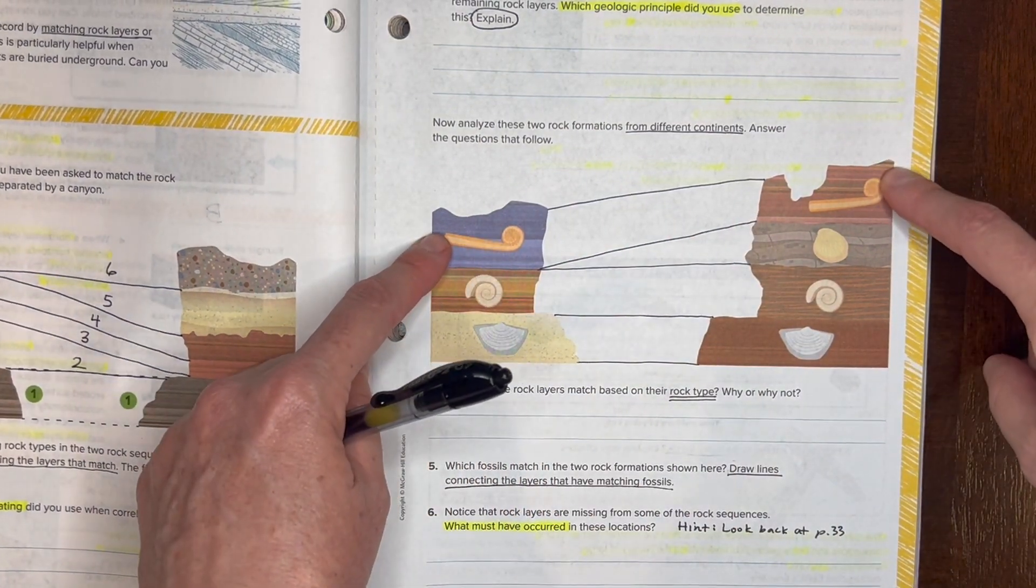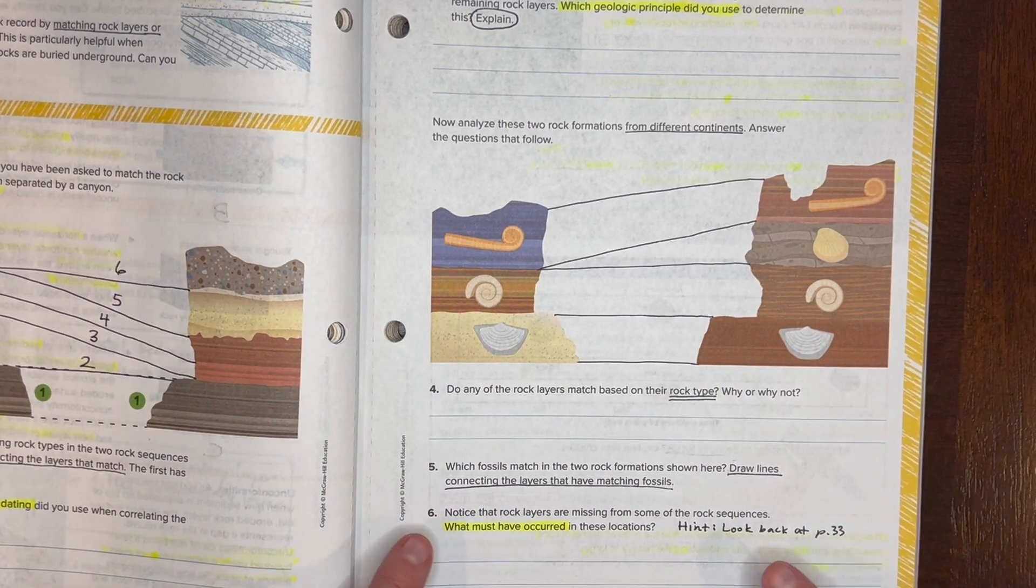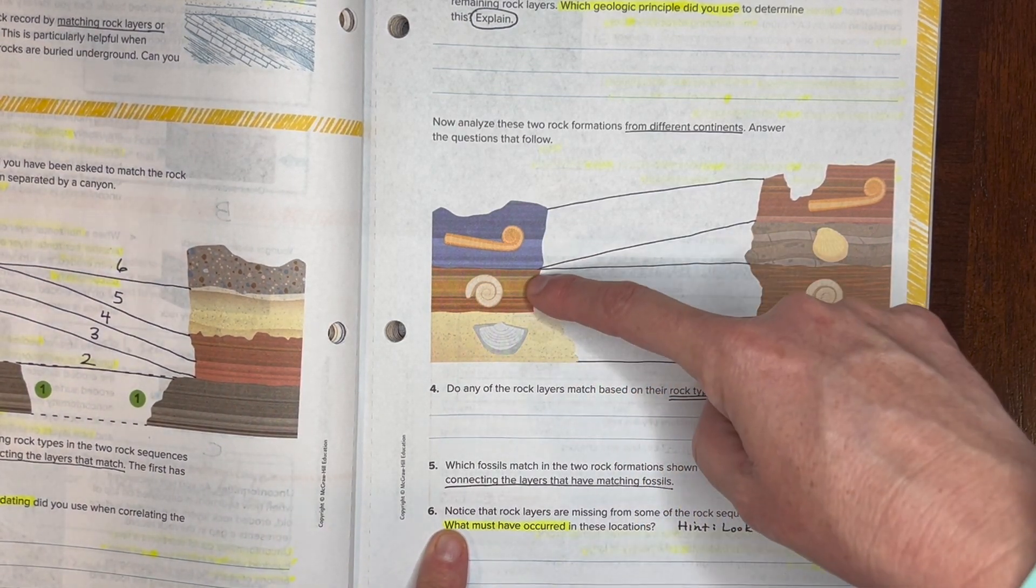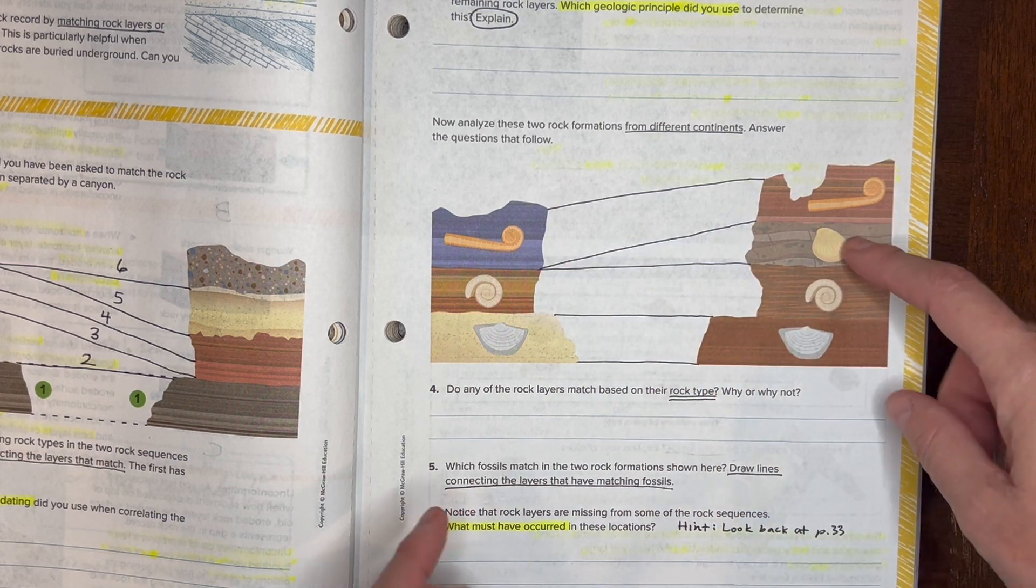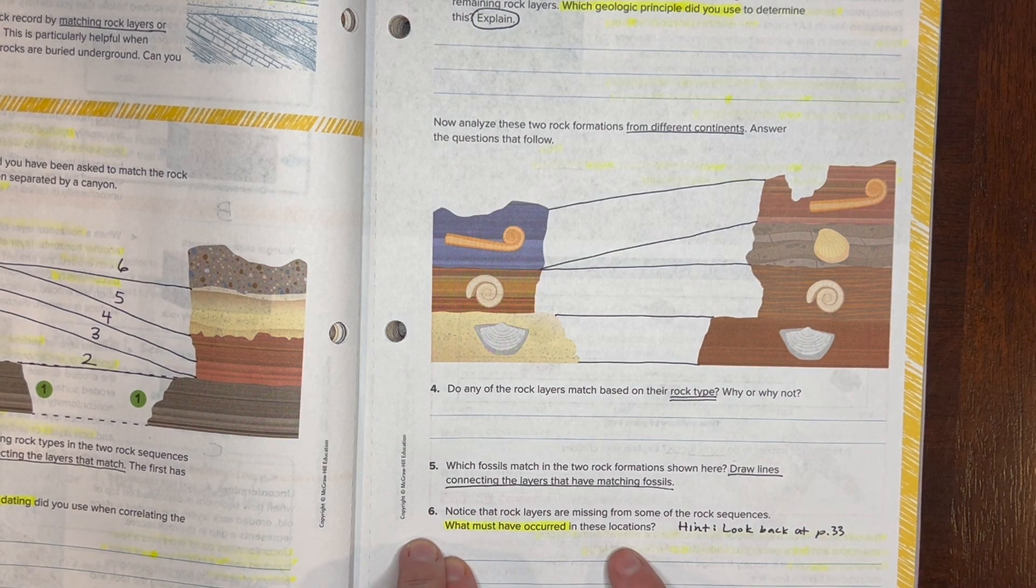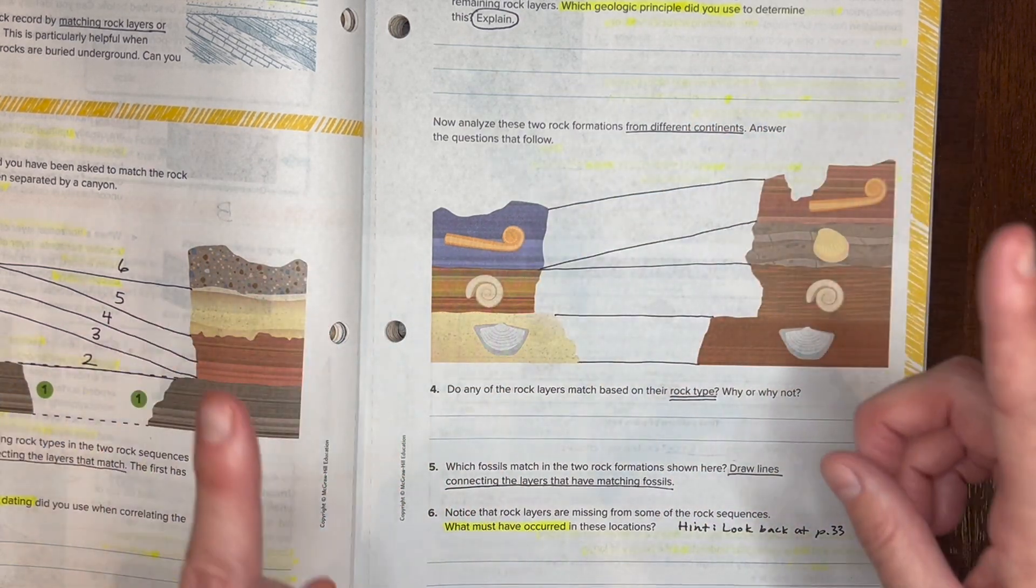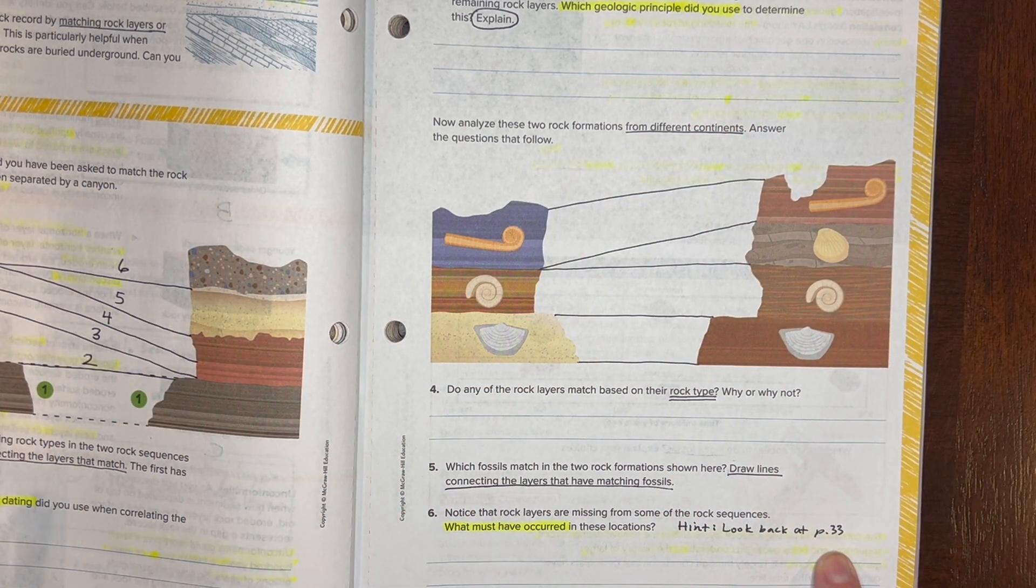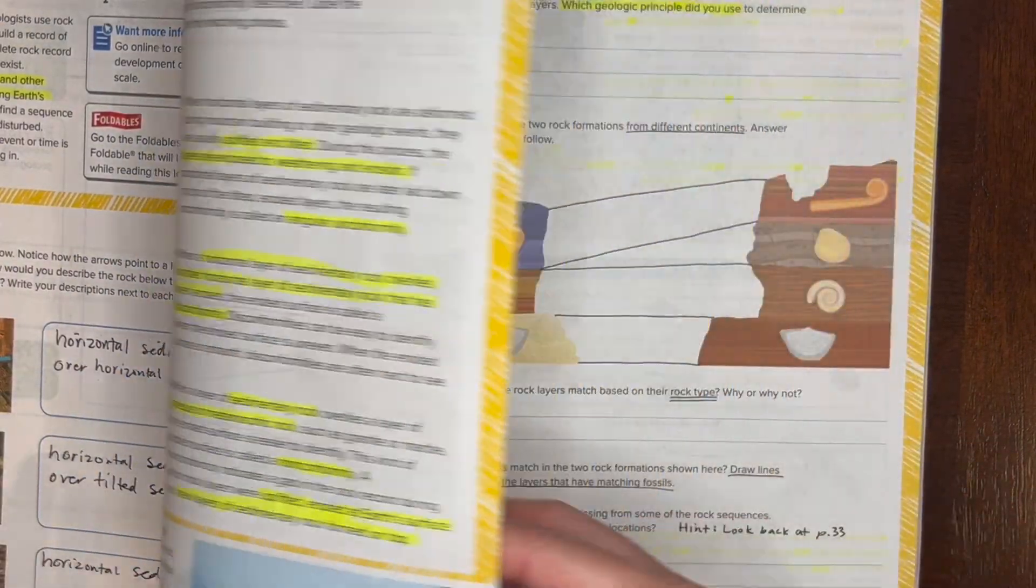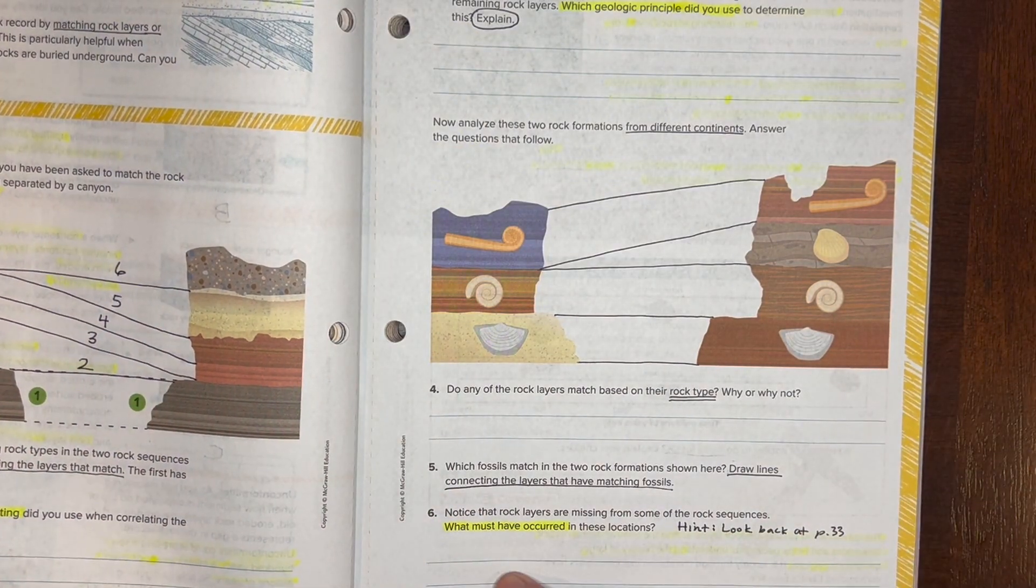Finally, number six says notice that there are some rock layers missing. Like this rock layer is not over here, but this must have lived at some time on this continent. So what must have happened over here to have this whole chunk just disappear? Now if you're not sure, look back at page 33. What did we learn about might happen to some of these layers? What happens to layers, how do they disappear? Answer that question for number six.